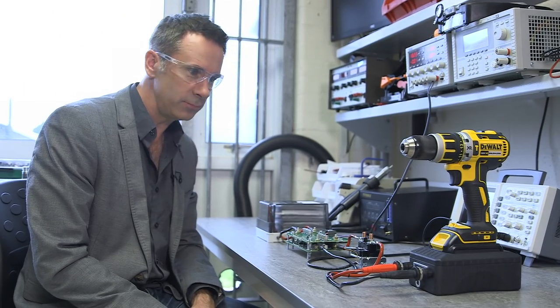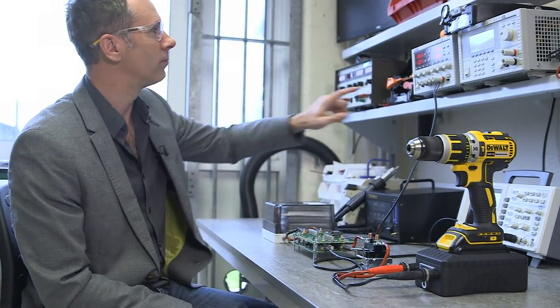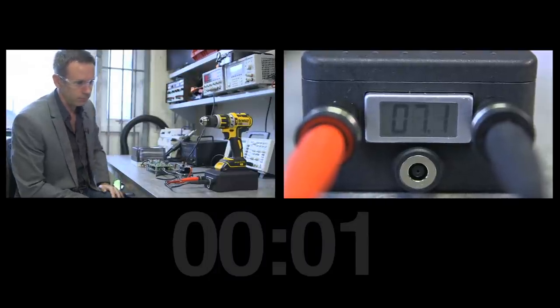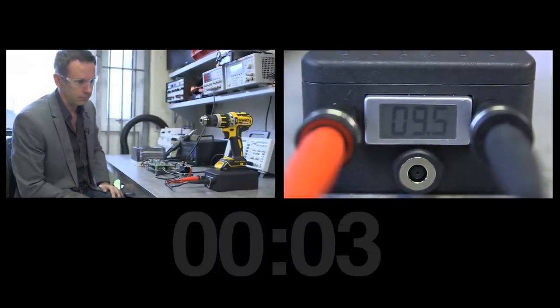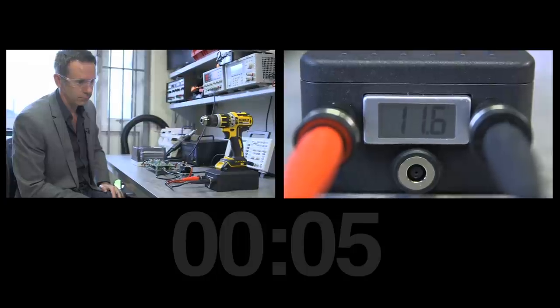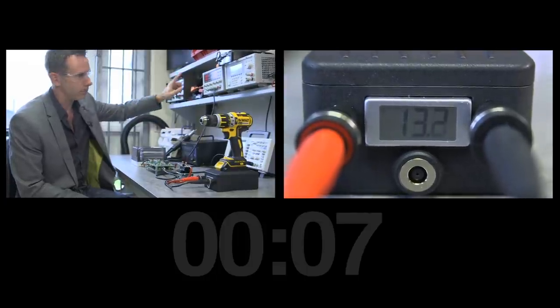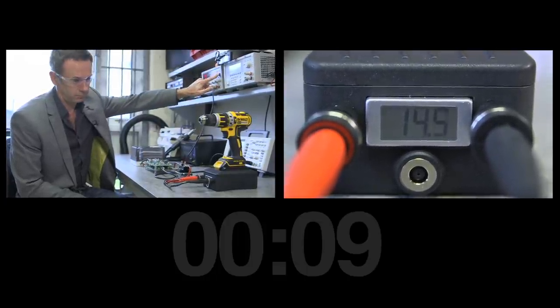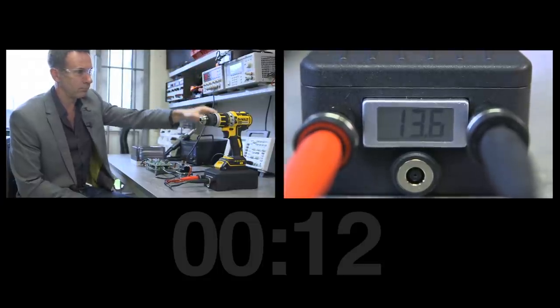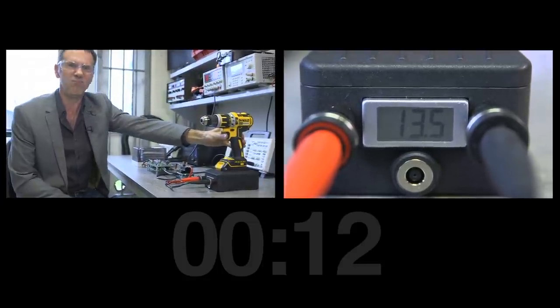Instead of the electrochemical charging in normal batteries, this charges by electrostatic means. It's called a supercapacitor. No chemical reaction means you can charge very quickly. This drill battery, for example, goes from zero to full in 12 seconds. You can zap and go.